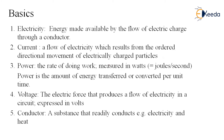What is electricity? It is an energy made available by the flow of electric charge through a conductor. When electric charges flow through a conductor, for example a wire, we call this electricity. Current is a flow of electricity which results from the ordered directional movement of electrically charged particles.